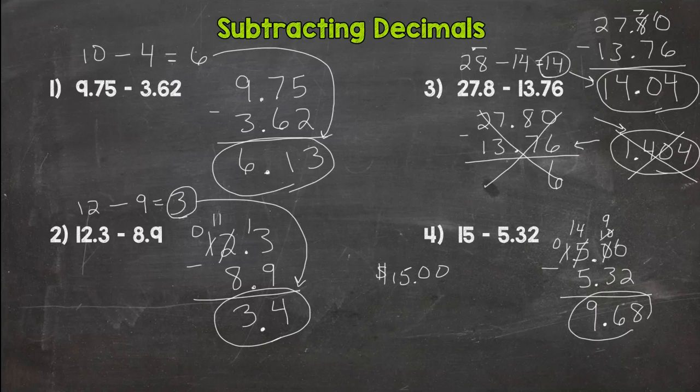Let's do some estimation here to see if this is realistic. 15 is a whole number, so the closest number is obviously 15, and 5.32 rounds to five. So we get to fifteen minus five, which is ten. Is our answer close to our estimate? 9.68? Yes, we have a reasonable answer.